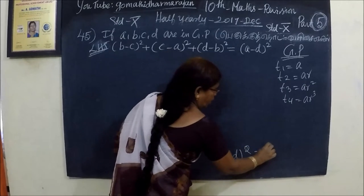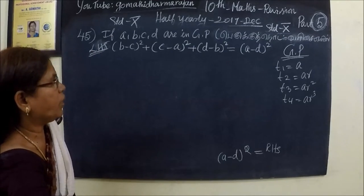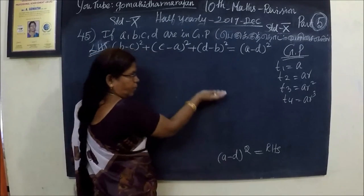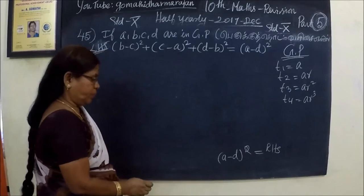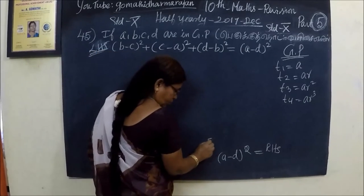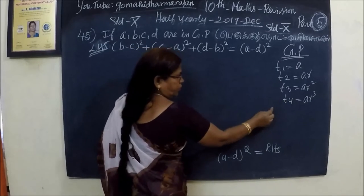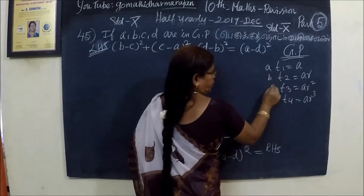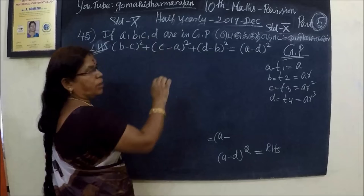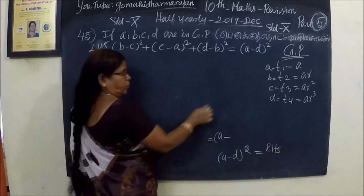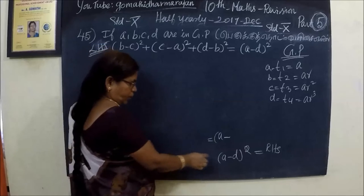Now we can finish equal to RSS. We can also add the value of LSS. So, this is a-d whole square — A, B, C, D. This is a question: A, B, C, D, R, G, P. This is a 4 square.